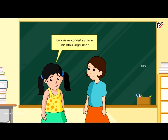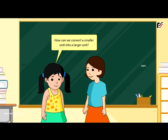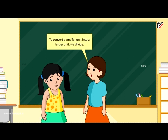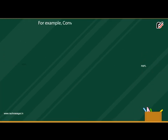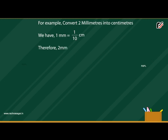To convert a smaller unit into a larger unit, we divide. For example, convert two millimetres into centimetres. We have one millimetre is equal to one-tenth of a centimetre. Therefore, two millimetres is equal to two multiplied by one-tenth centimetre, which equals two-tenths centimetre, equal to zero point two centimetres.